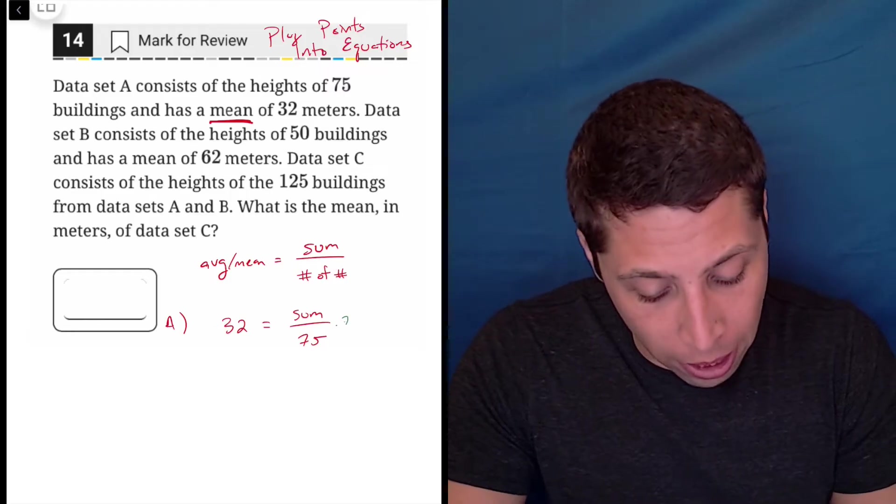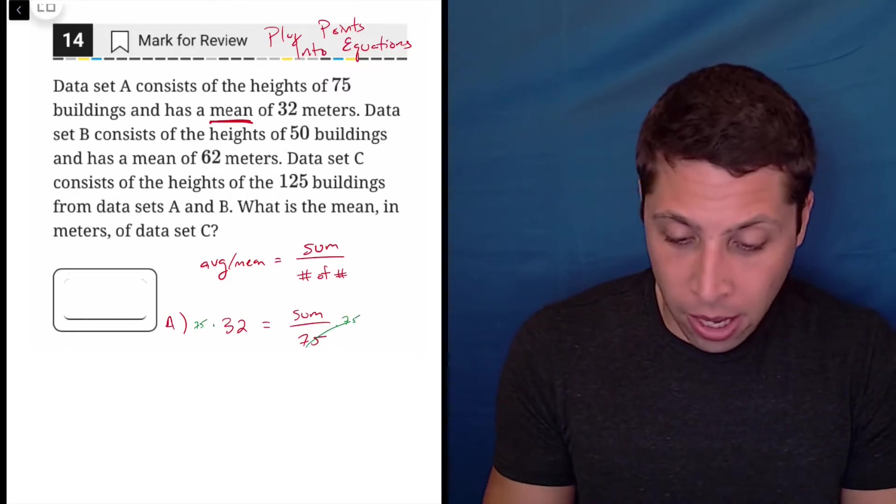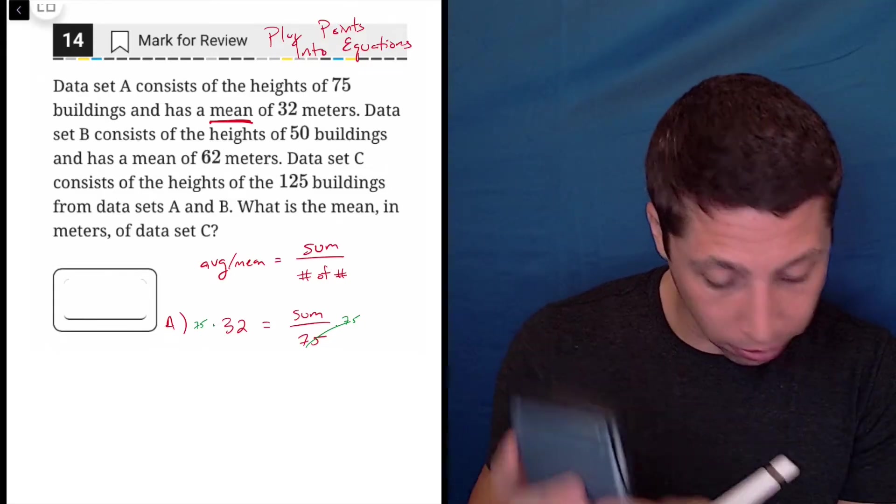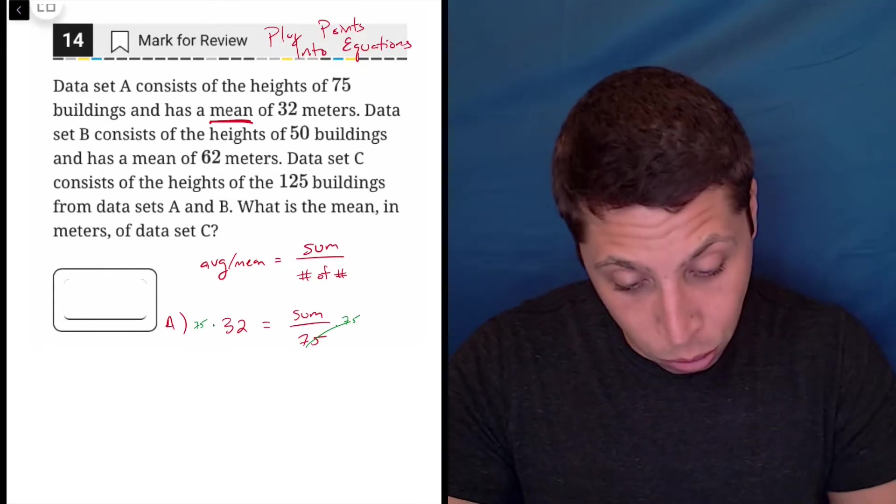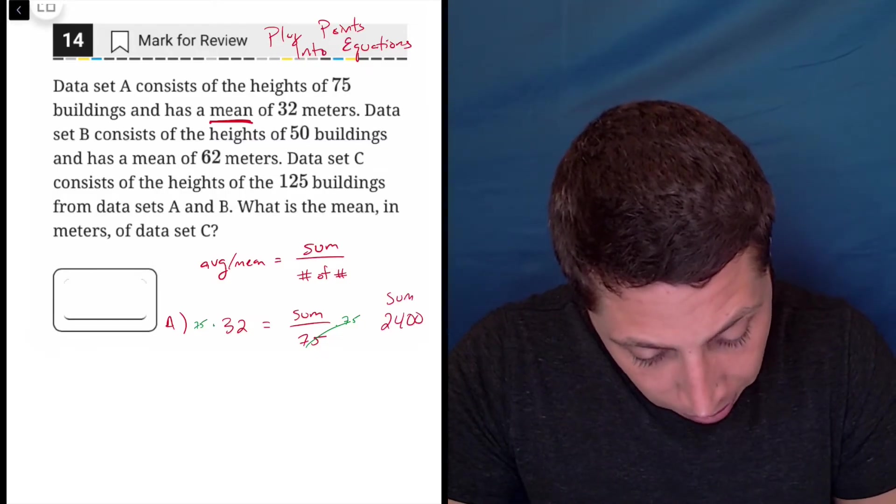So I would just multiply both sides by 75 to get rid of that. And I'm going to get that the sum, 32 times 75 is 2,400. So 2,400 is my sum.